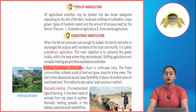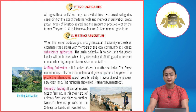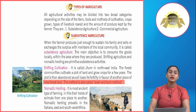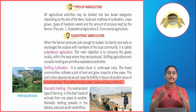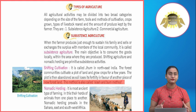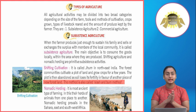Shifting cultivation: It is called jhoom in north-east India. The forest communities cultivate a plot of land and grow crops for a few years. The plot is then abandoned as the soil loses its fertility, in favor of another piece of new forest land. This method is also called the slash and burn method. After harvesting, the patch of land becomes barren and infertile, so the next crop is grown on a different patch of land.